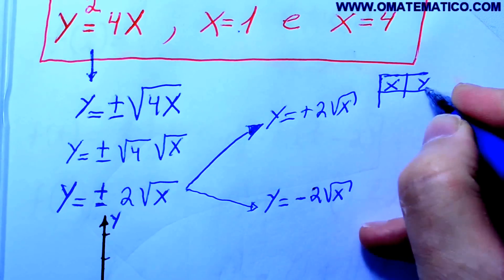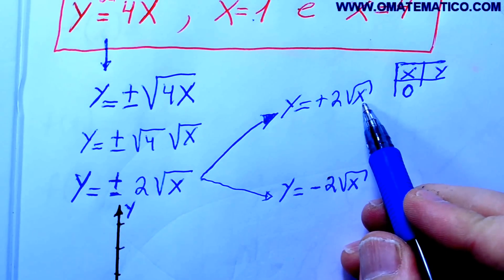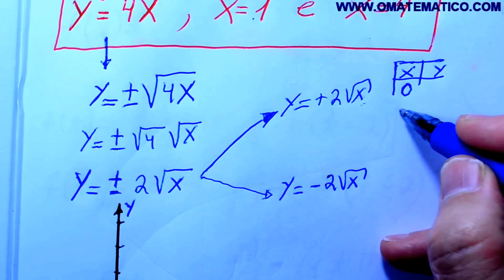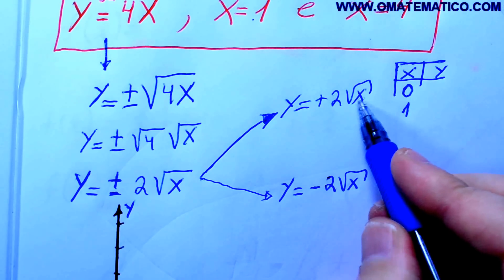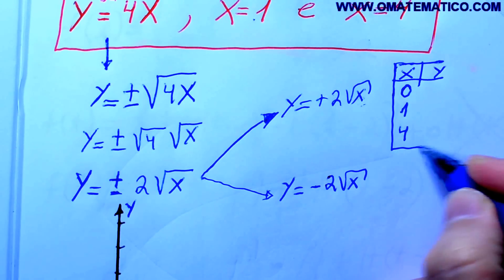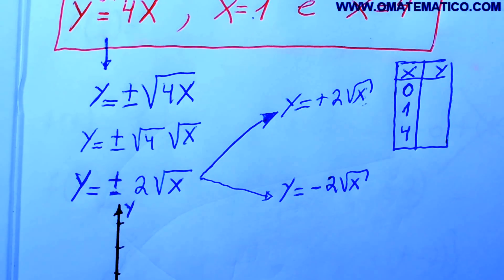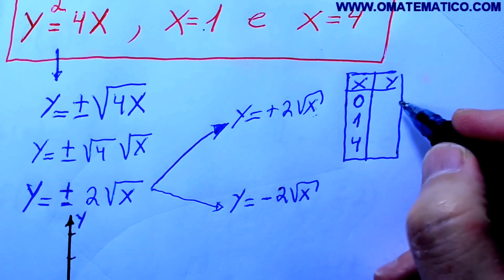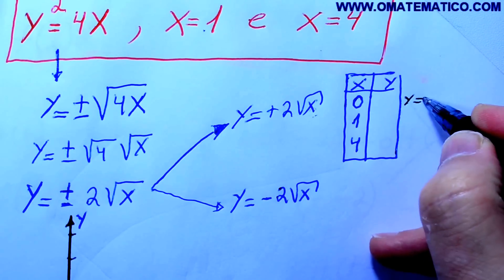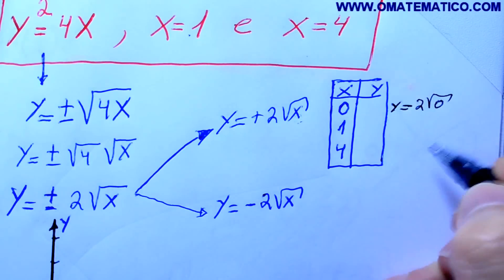Agora, nós vamos pegar valores e colocar numa tabelinha aqui para fazer o gráfico, com x e y. Vou pegar o zero, porque o zero tem raiz exata. E o outro que tem raiz exata é o 1. O outro que tem raiz exata é o 4. Então, colocando esses valores, fazendo o cálculo: y é igual a 2 raiz de zero.